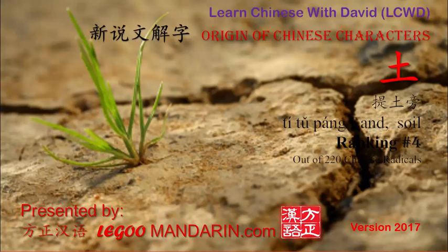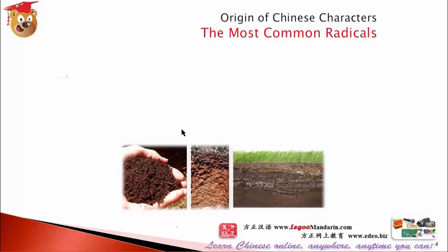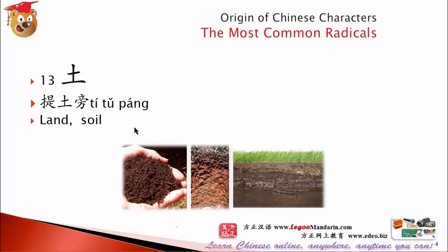土 — tree also uses a radical called 土. 土 is used as a radical in many Chinese characters. Interesting.